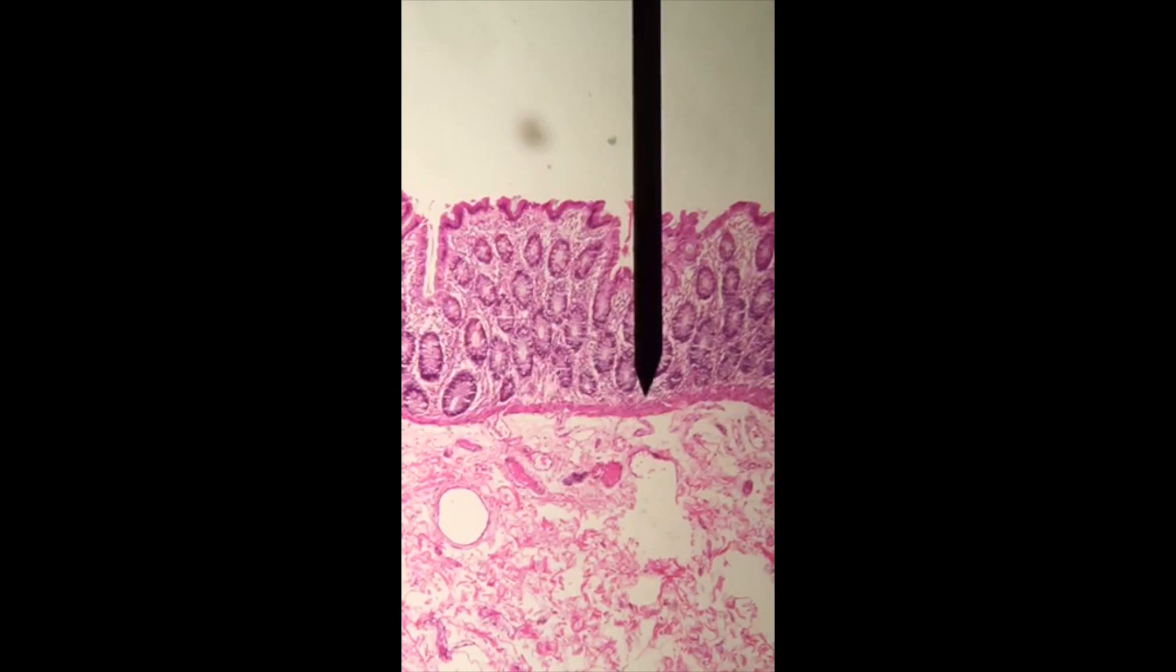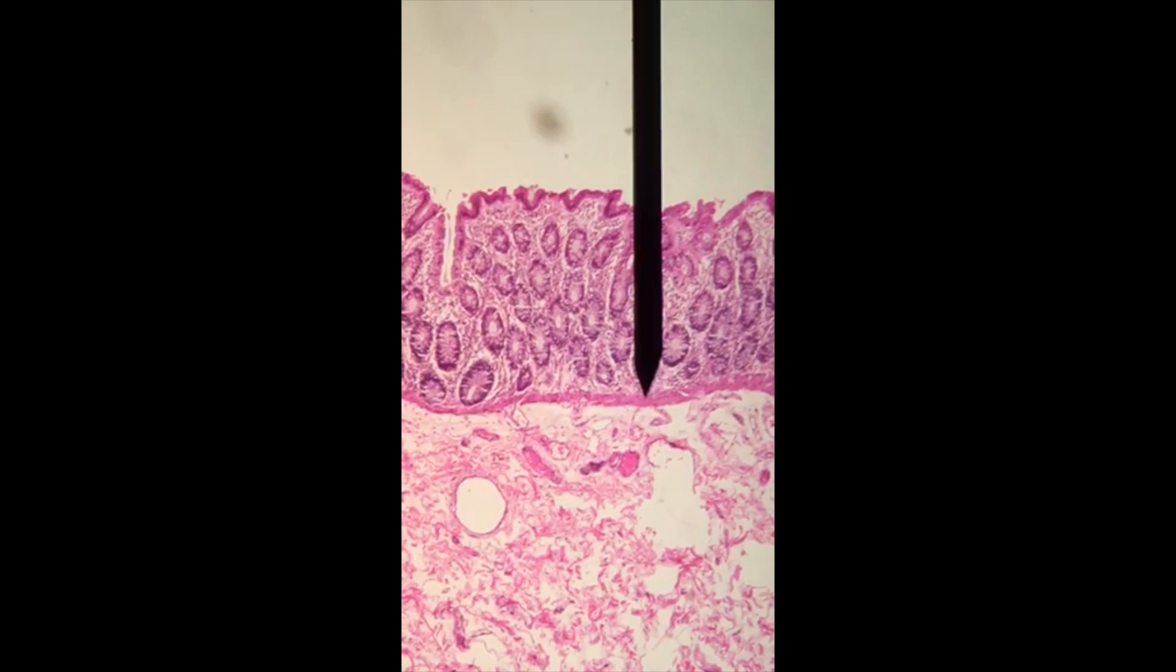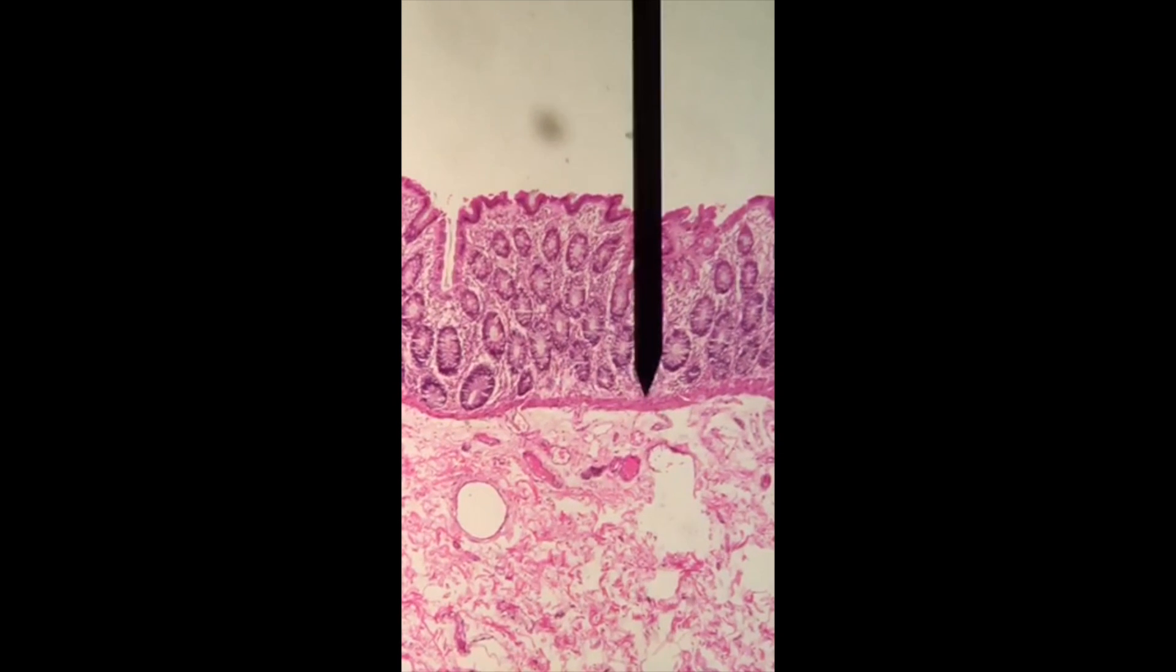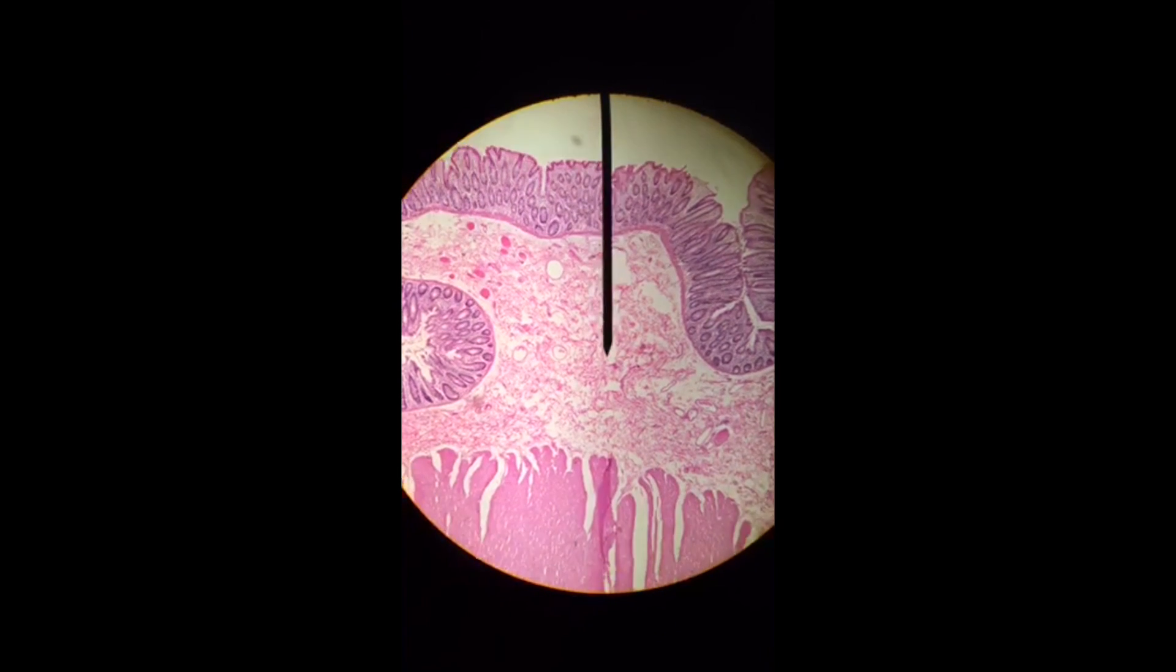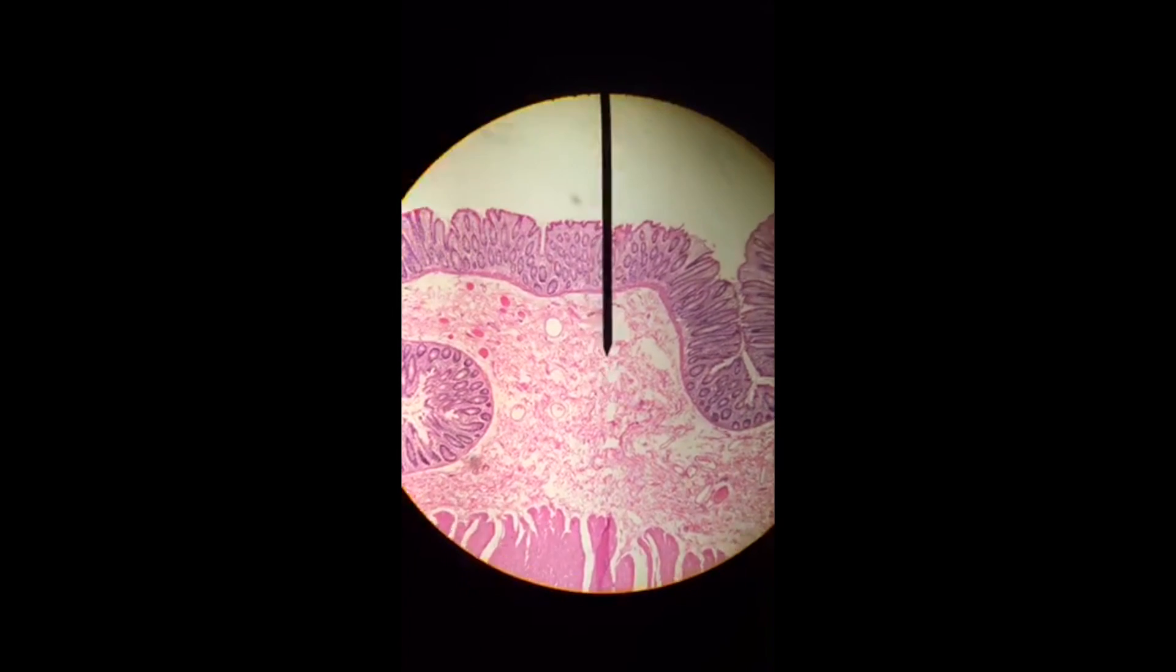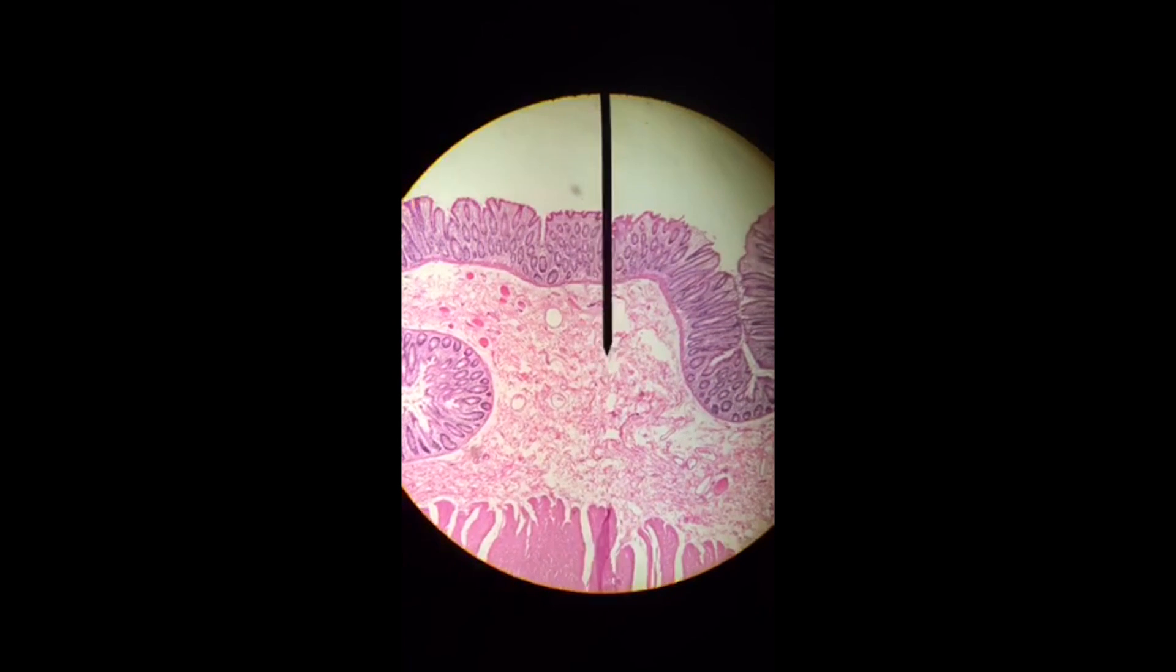We're going to zoom in to take a closer look at that little band of muscle known as the mucosa muscularis. And below it we're going to navigate to our submucosa. Again, connective tissue, blood vessels, lymphatic vessels are going to come through here.